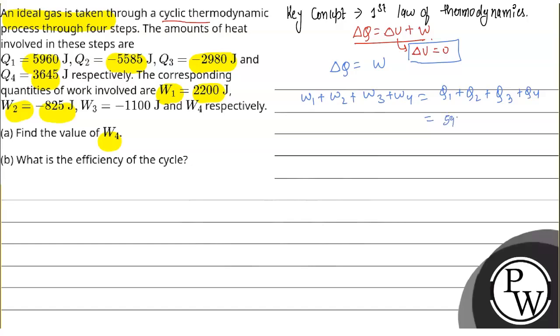We will write it over here. Q1 ki value 5960, Q2 ki value minus 5585, plus Q3 ki value minus 2980, plus Q4 3645 is equal to W1 is 2200, W2 is minus 825 Joules, W3 is minus 1100 Joules plus W4.